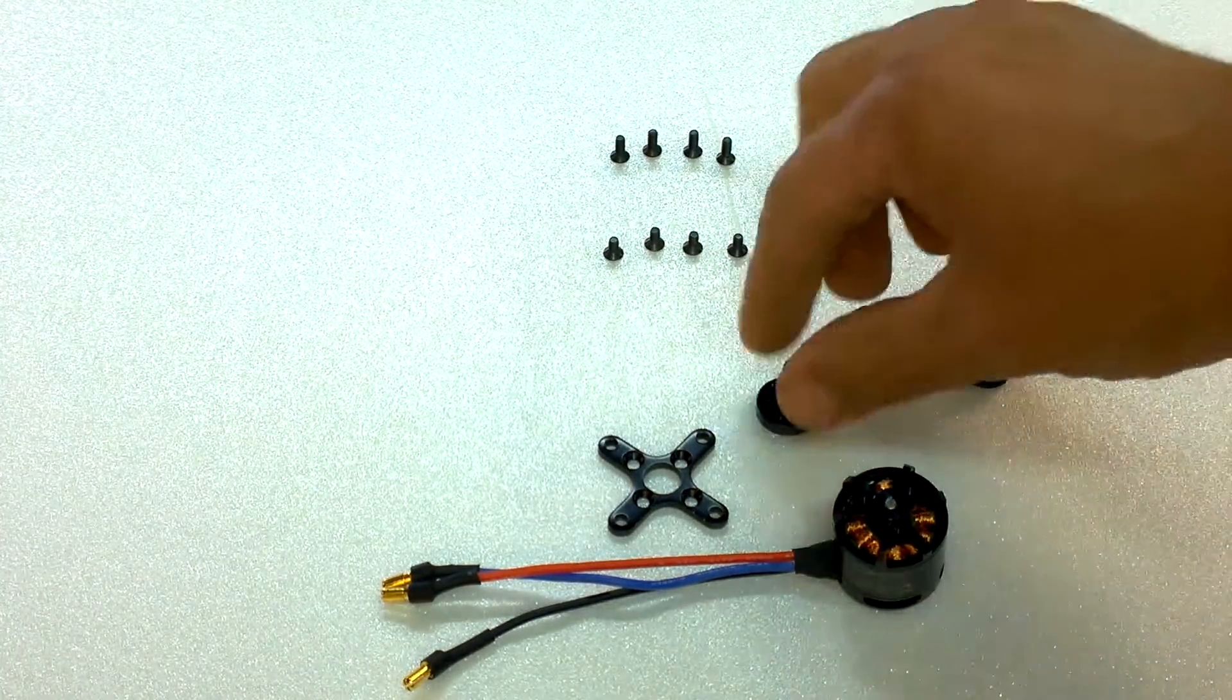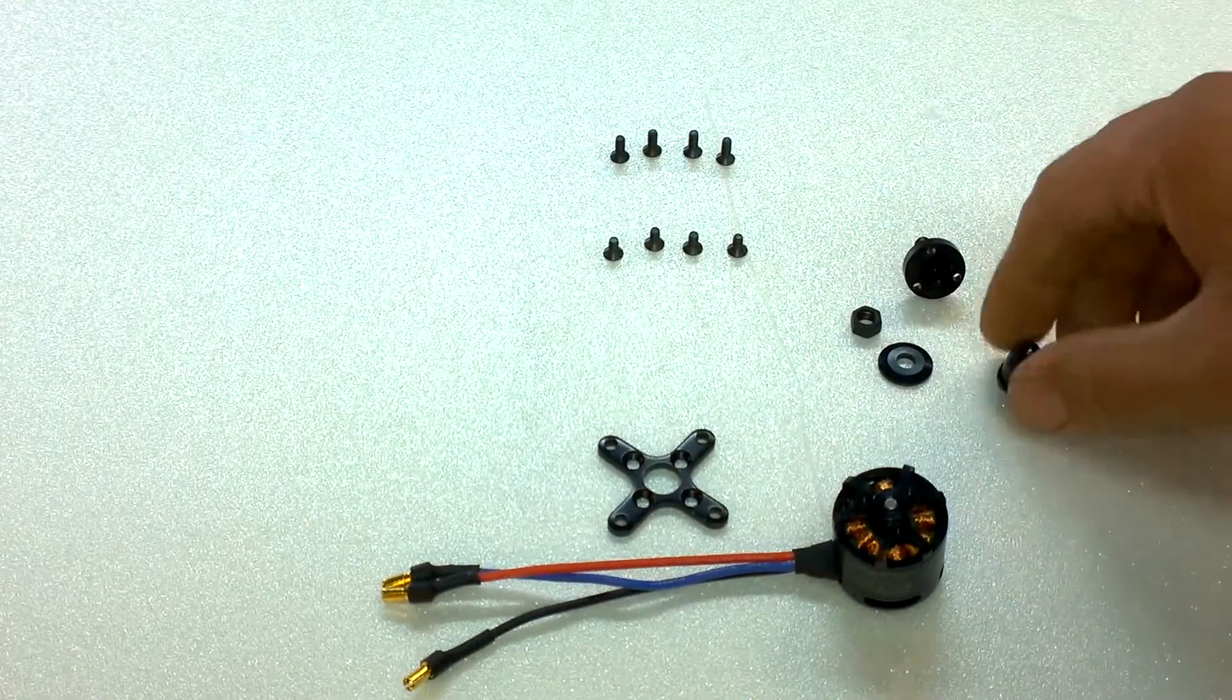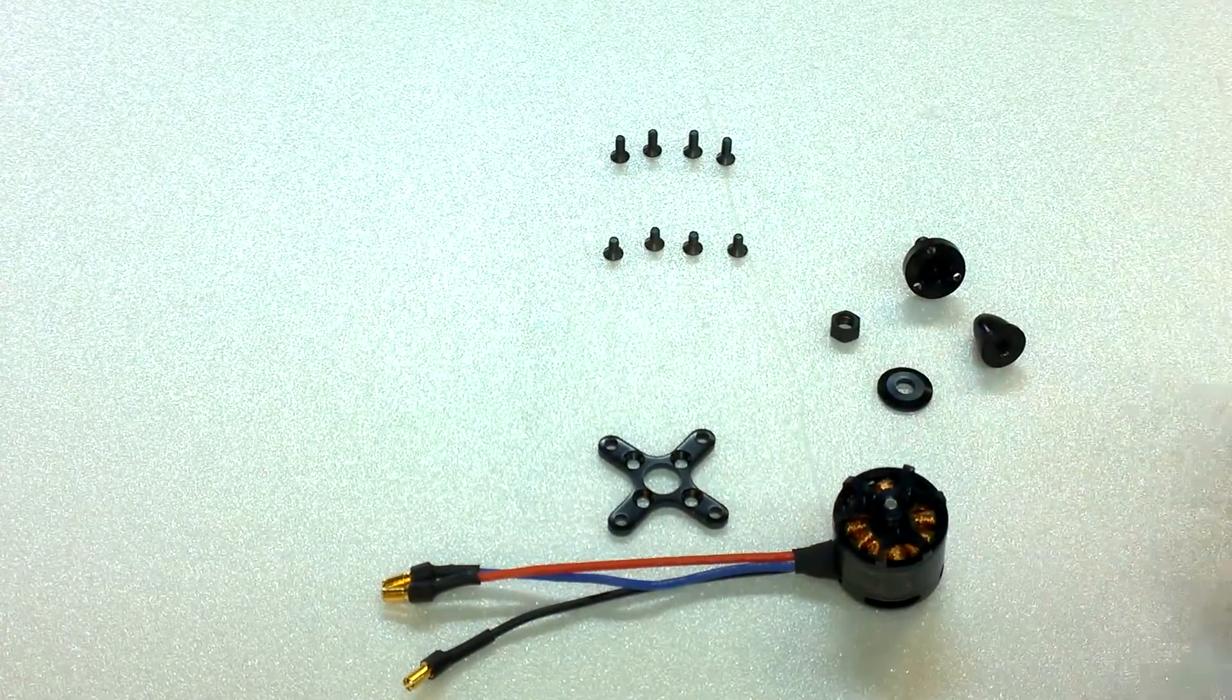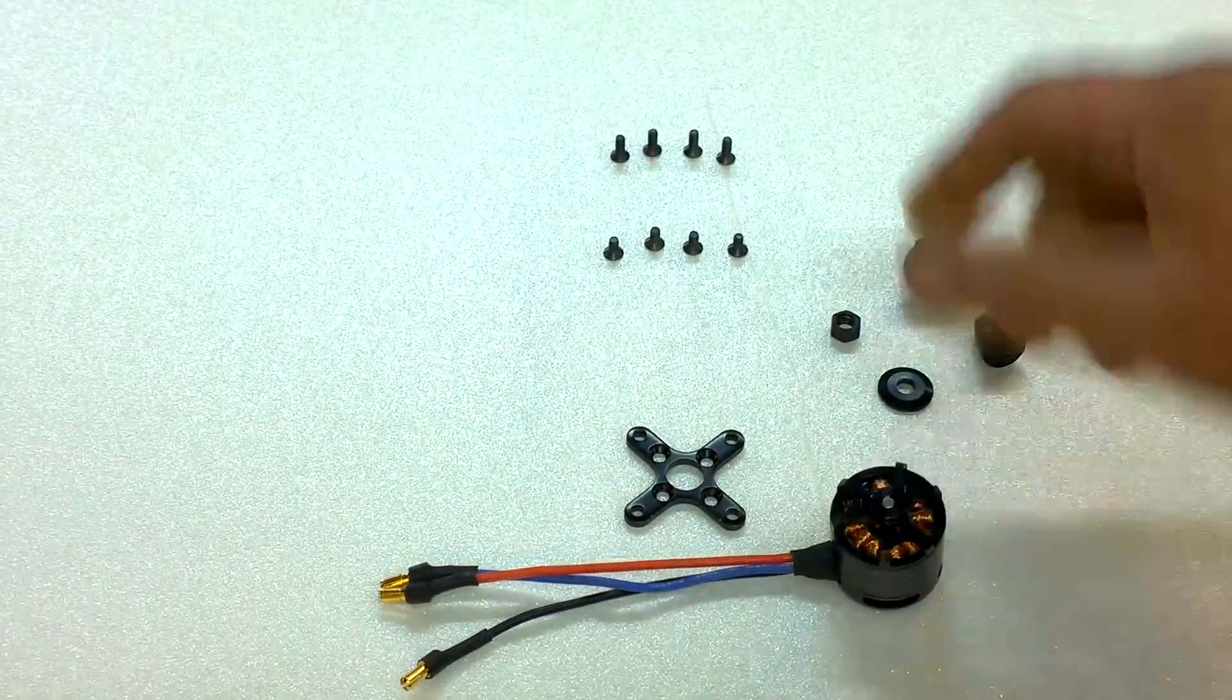It comes complete with its mounting bracket. You have the mounting support there, the prop support. You've got a choice of nut or cone to go on there and a nice little domed washer as well with a bracket there. So that's all complete with screws as well.